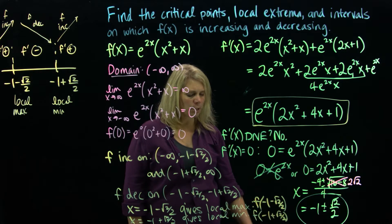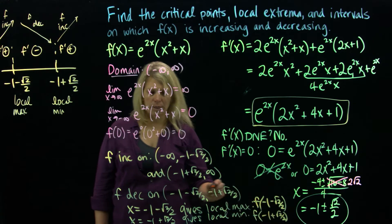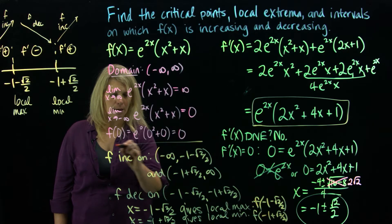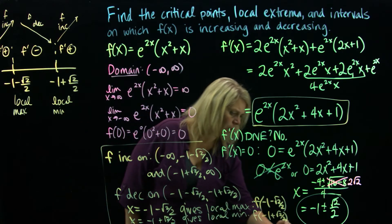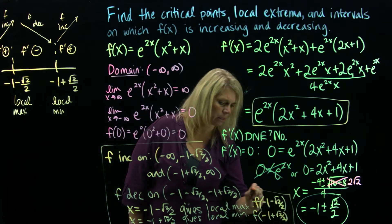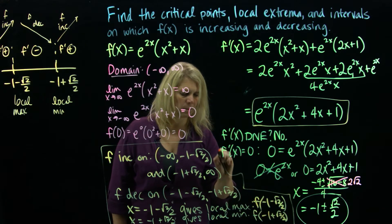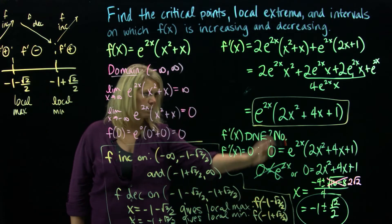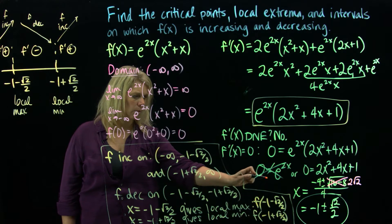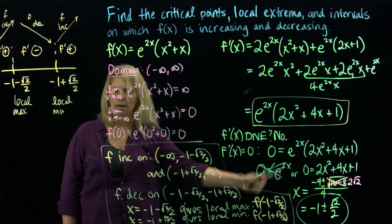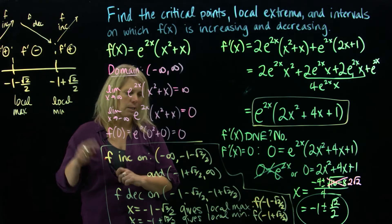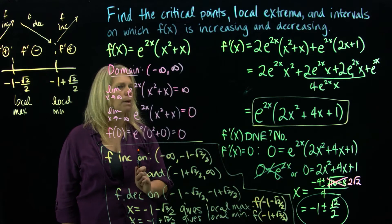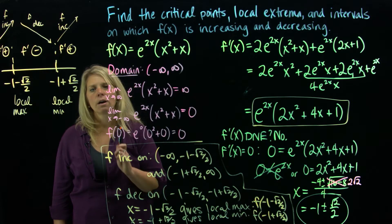So we got a bunch of information: critical points were found by setting the derivative equal to zero, and then sign chart work determined all the rest — increasing/decreasing intervals and the nature of the critical points.